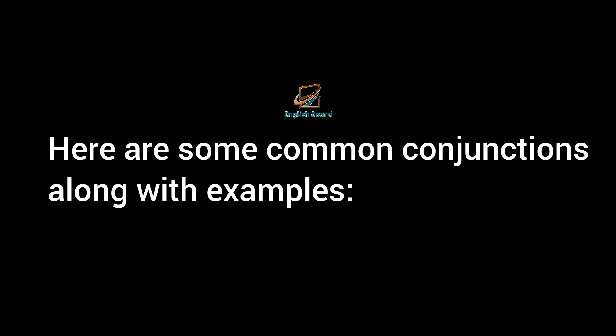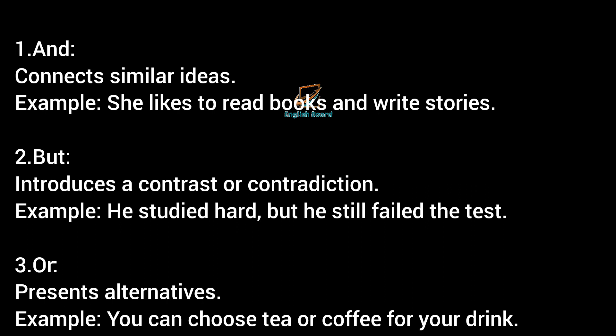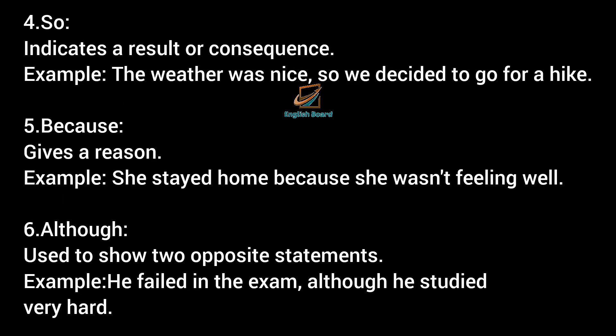Here are some common conjunctions along with examples. 'And' connects similar ideas. Example: She likes to read books and write stories. 'But' introduces a contrast or contradiction. Example: He studied hard but he still failed the test. 'Or' presents alternatives. Example: You can choose tea or coffee for your drink. 'So' indicates a result or consequence. Example: The weather was nice so we decided to go for a hike.